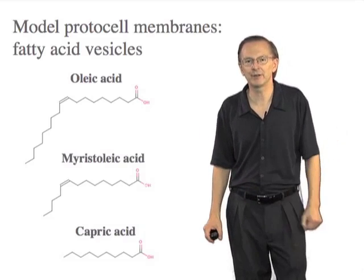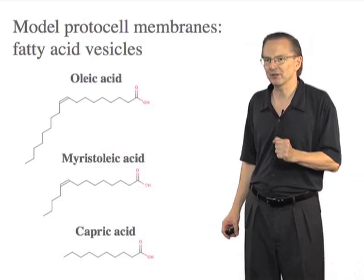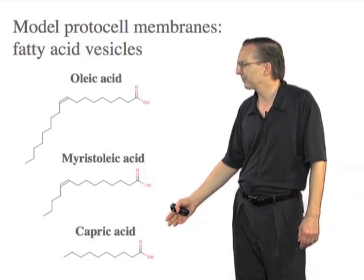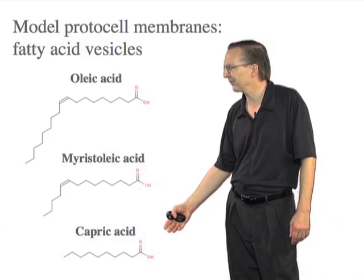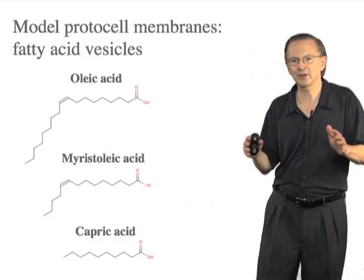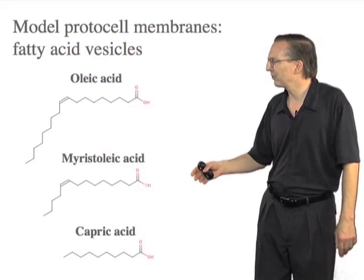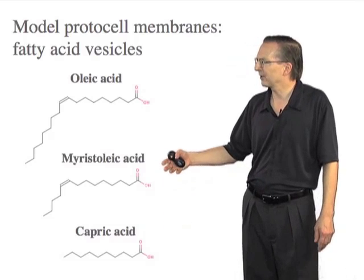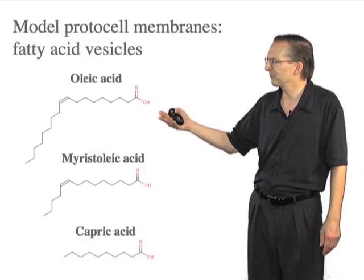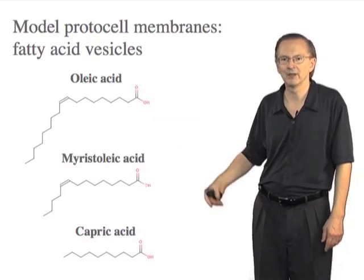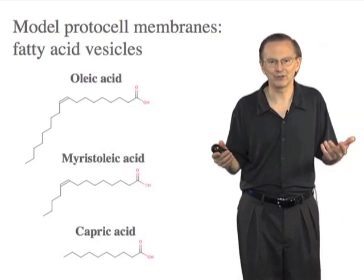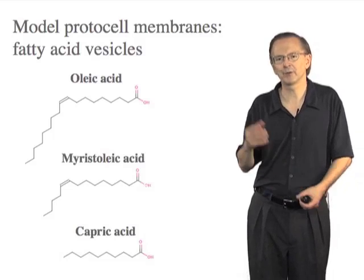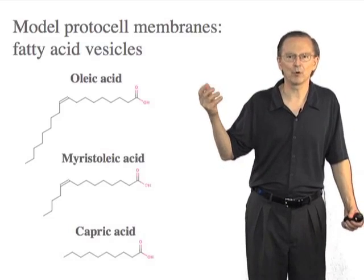So it doesn't seem like the prebiotic assembly of molecules that could spontaneously form membrane vesicles is all that difficult. It's definitely an understudied area of prebiotic chemistry and needs more work, but it looks reasonably plausible. The most prebiotically likely molecules would be things like capric acid — short-chain saturated fatty acids. We do experiments in the lab with molecules like this, but also use longer-chain unsaturated molecules like myristoleic acid and oleic acid as model systems, because they're generally easier to work with.